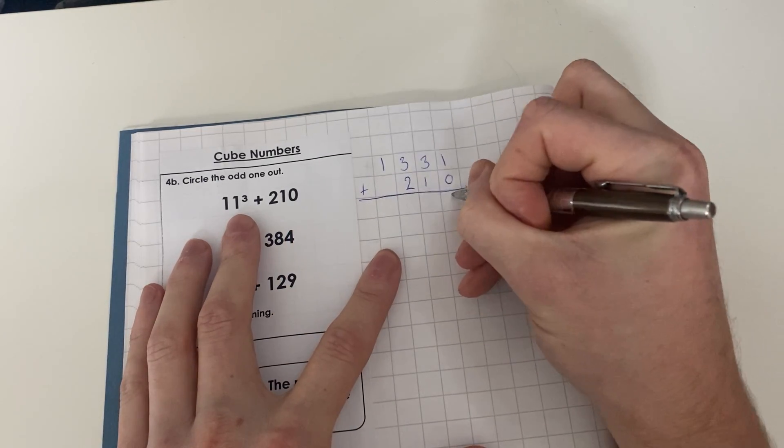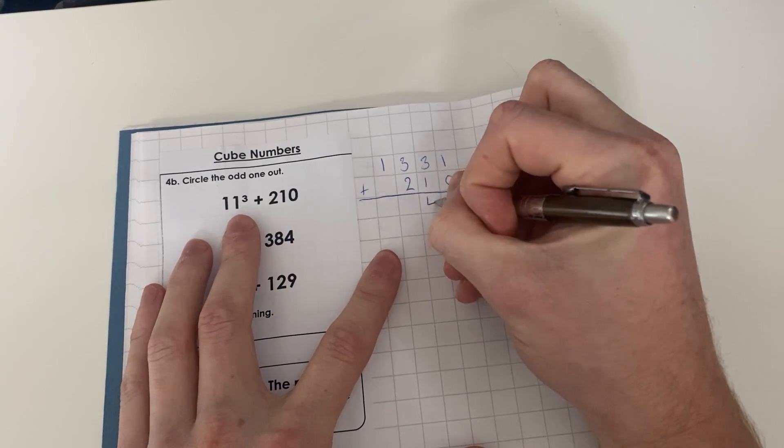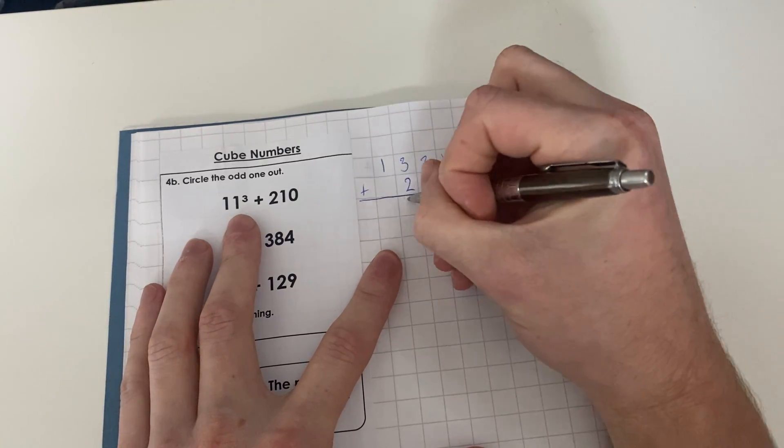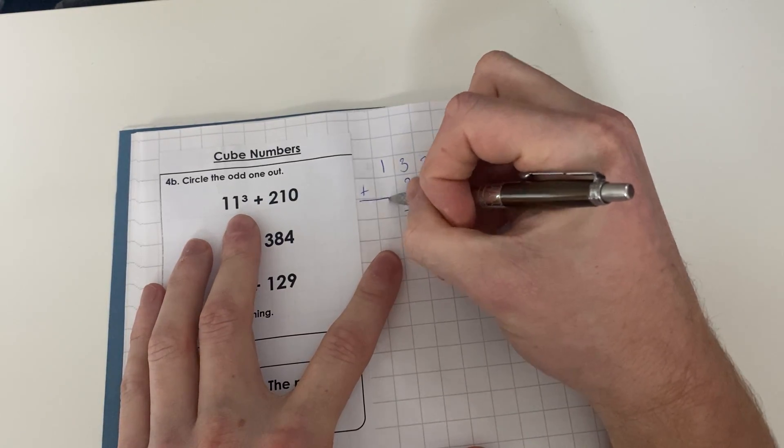1 + 0 = 1, 3 + 1 = 4, 3 + 2 = 5, 1 + 1 = 1. So this answer is 1541.